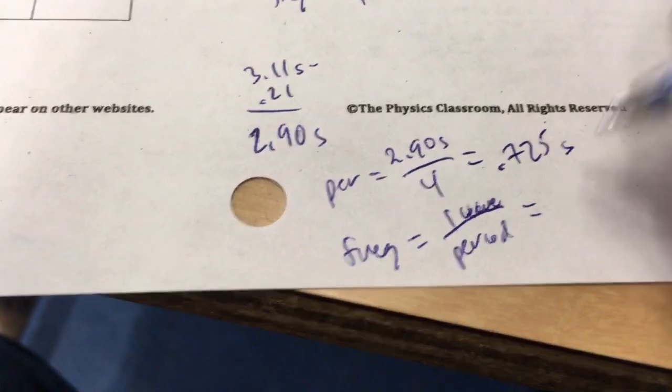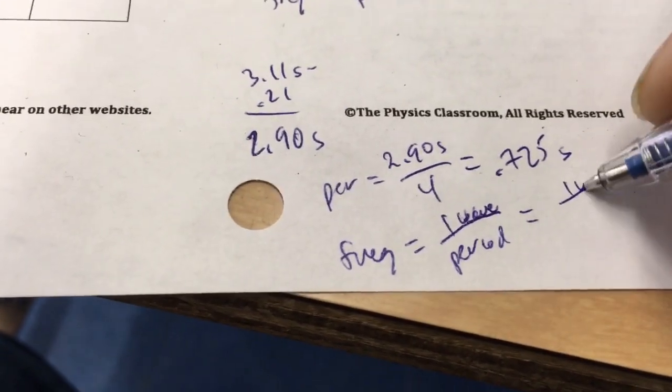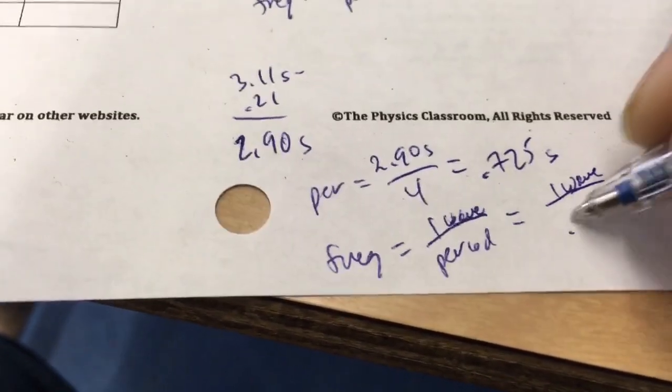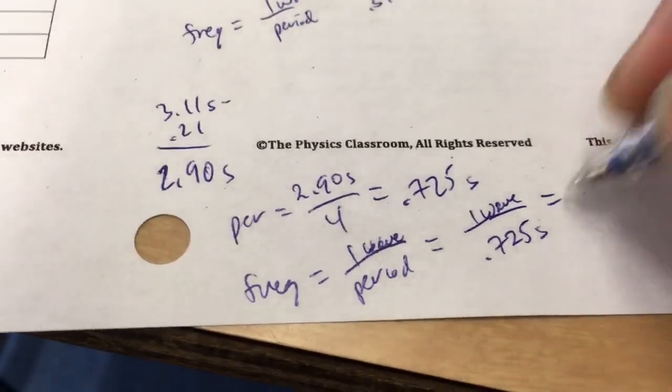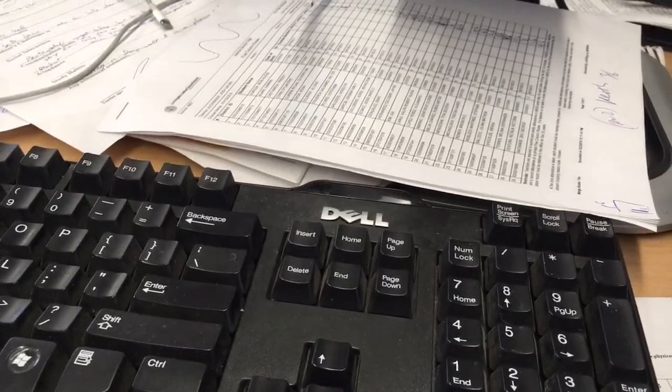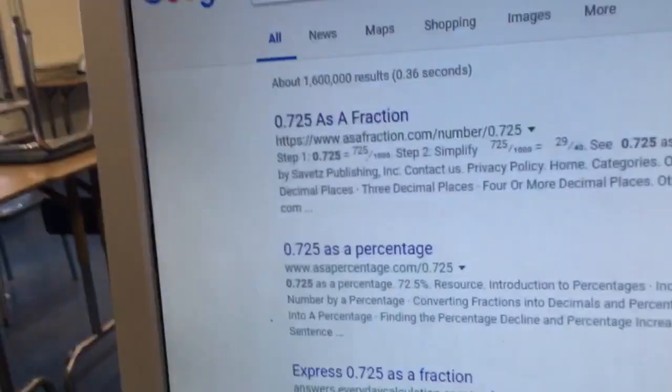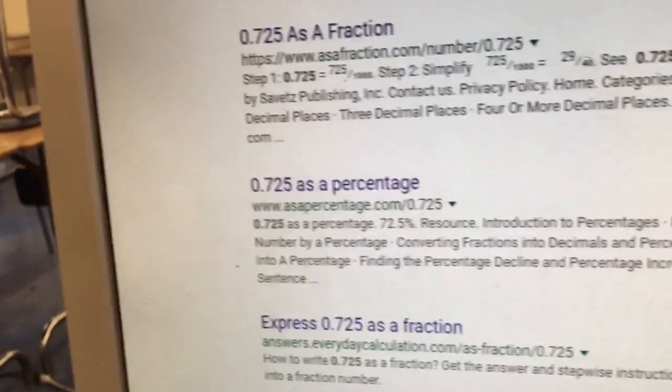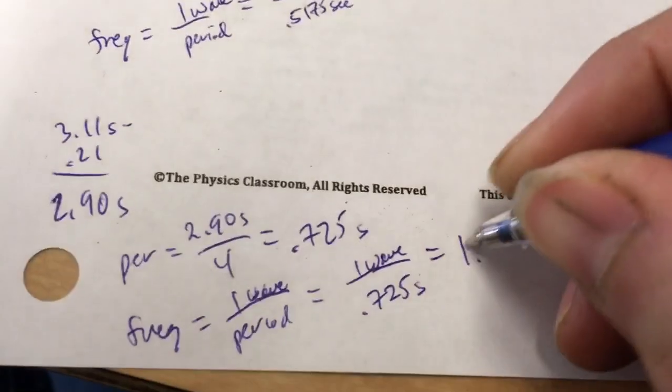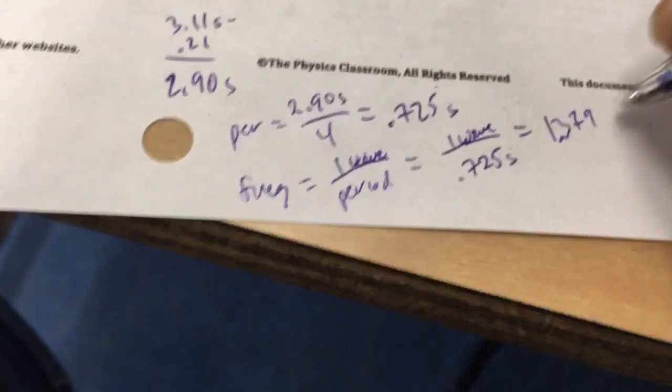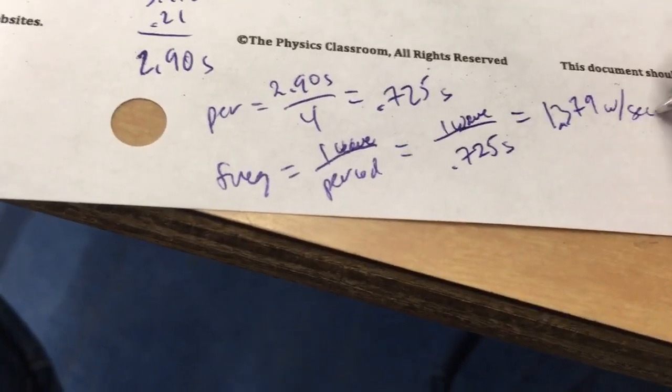Now if I want to find the frequency, it's 1 over the period. Because it's 1 wave per period. And so that's going to be 1 wave divided by the time that it takes, or 0.725 seconds. And what is that? 1 divided by that. There we go. 1.379.